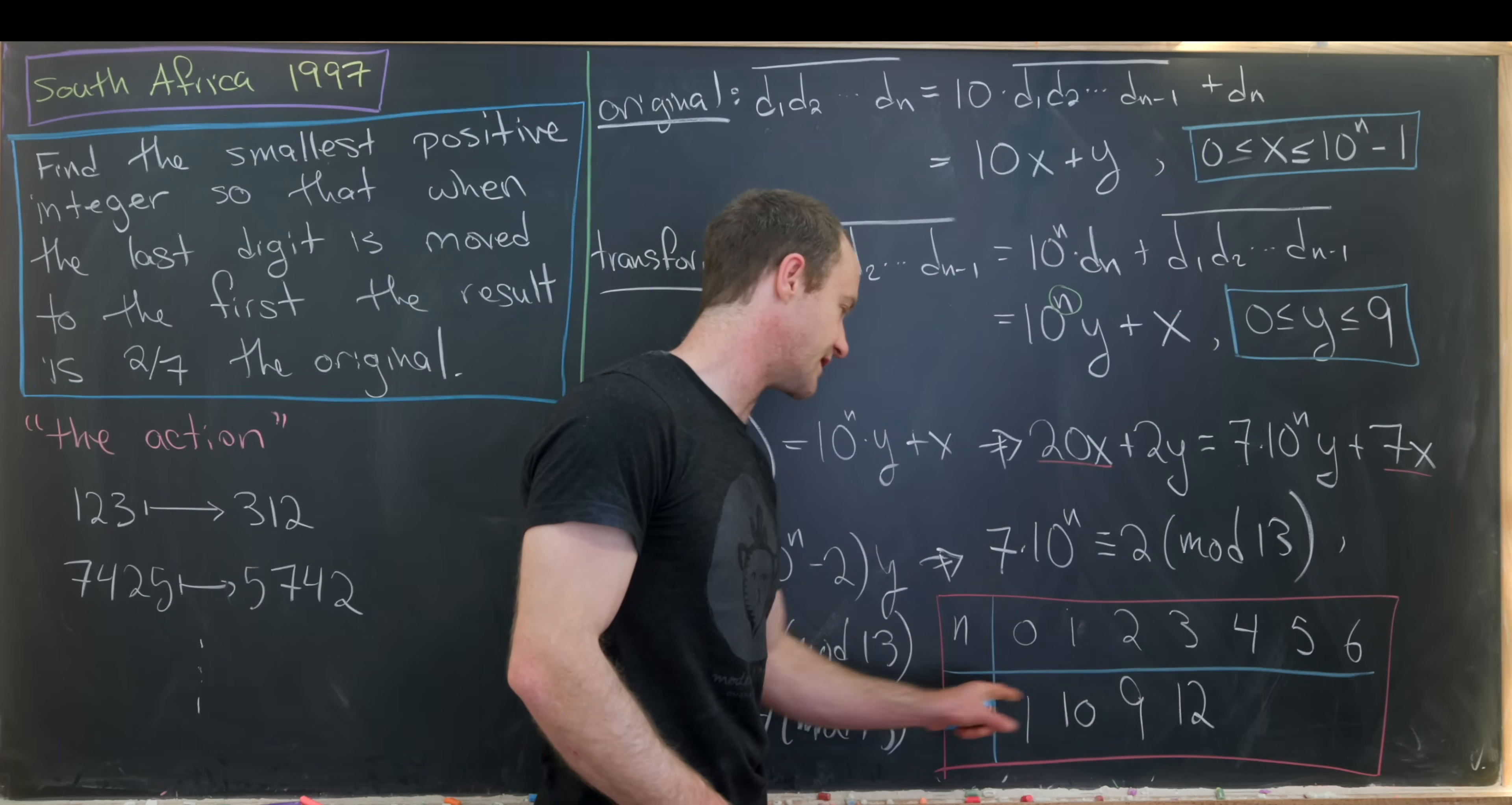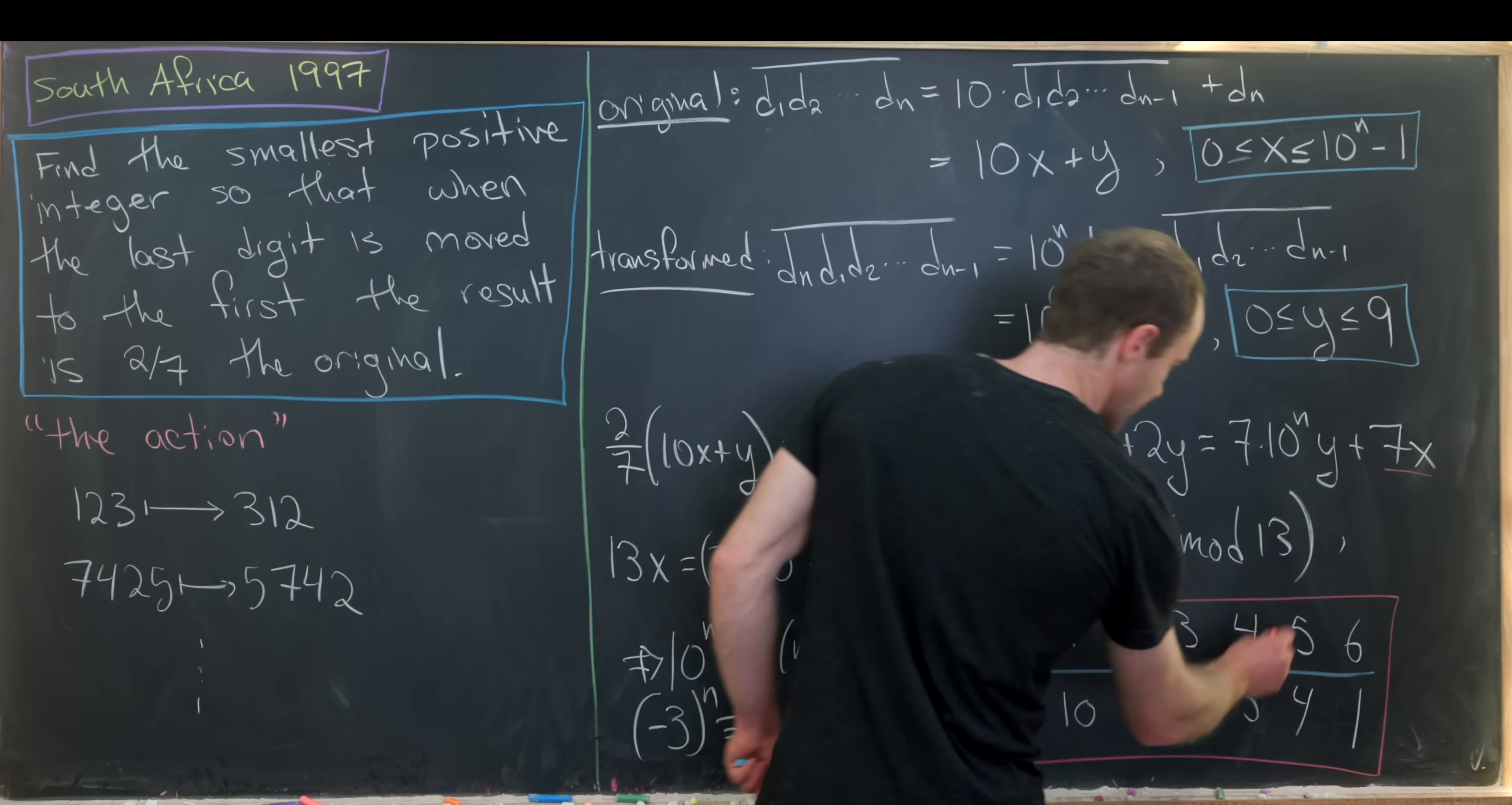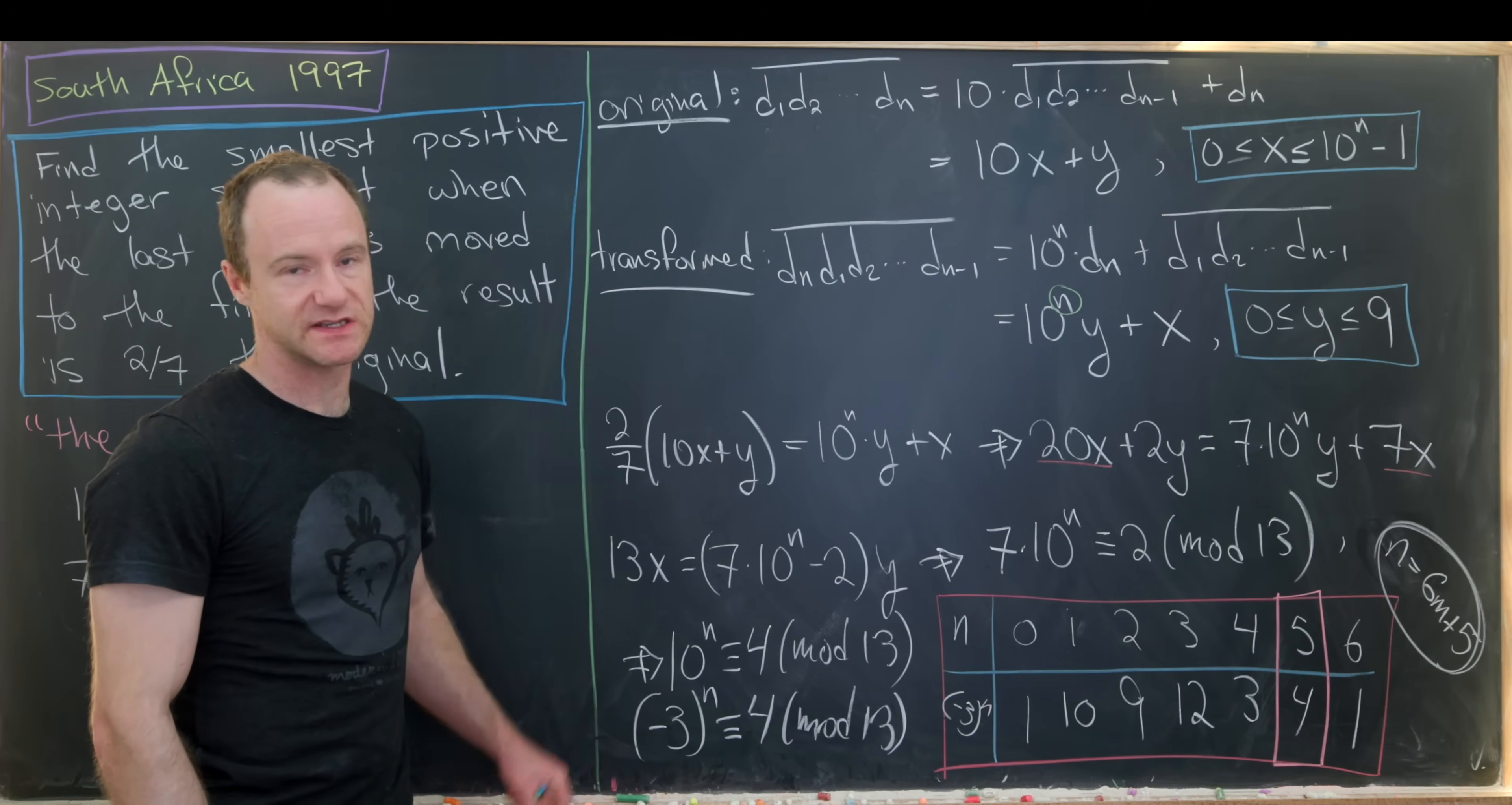And then negative 3 to the 4th will be the same thing as negative 3 times negative 3 cubed. So that'll be negative 36. But negative 36 is 3. That's because 36 is 3 less than 39, which is a multiple of 3. Now multiplying negative 3 to 3, we get negative 9. But negative 9 is the same thing as 4 mod 13. And then multiplying negative 3 to 4, we get negative 12. But that is 1 mod 13. So that completes a loop. So we want to zero in on this right here. Notice if we raise this to the fifth power, we get 4. But that's exactly what we want over here. But that doesn't necessarily tell us that n is equal to 5. It tells us that n is of the form 6m plus 5.